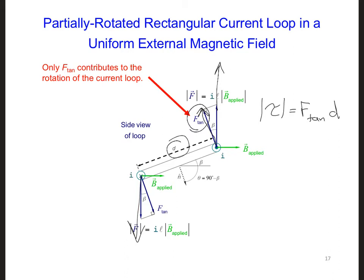Next, if we define beta to be the angle by which the loop has already rotated, and by geometry we can also find that this is also equal to beta. Then we can expand F tangential in our equation for the torque as being I, L, B applied, and cosine beta.